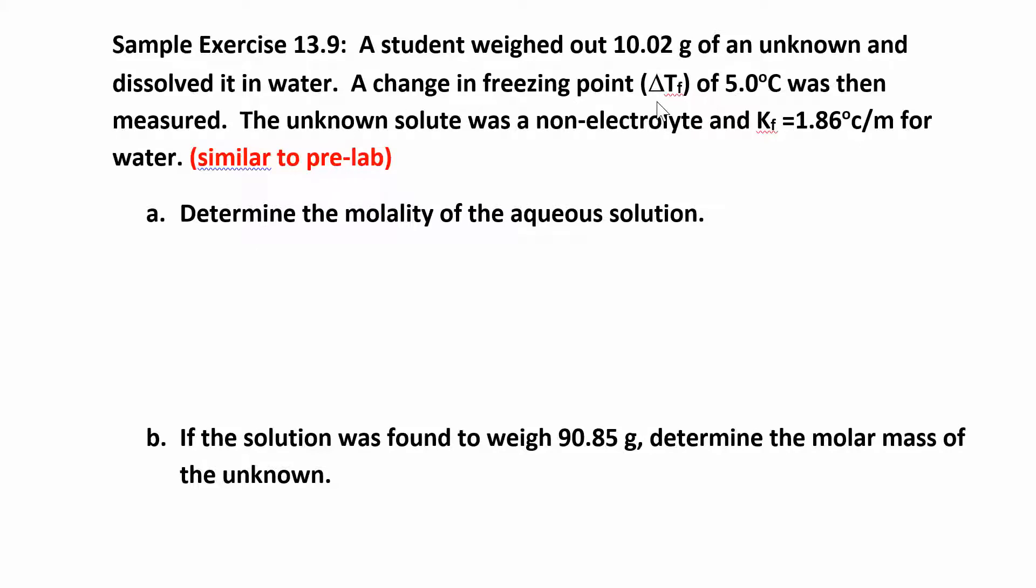A change in freezing point - this time they're giving you the delta T_f. Sometimes they'll just give you the two temperatures, like in lab. You're going to find the difference between those two temperatures. Take the absolute value of the freezing point, otherwise you're going to end up with a negative molality. Just when you're calculating the delta T_f, make that a positive number.